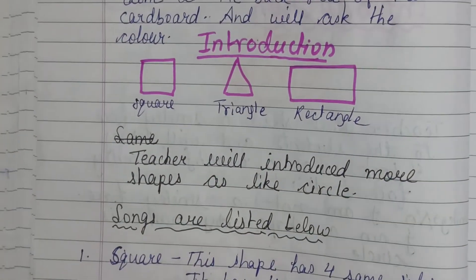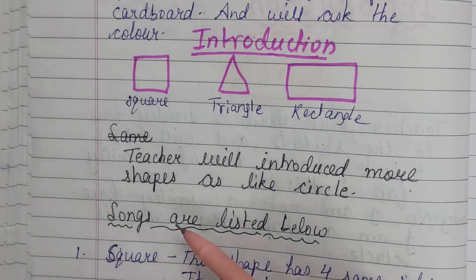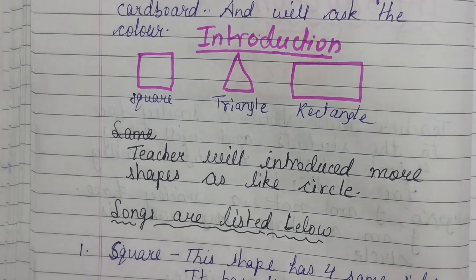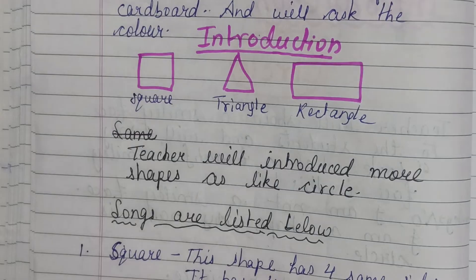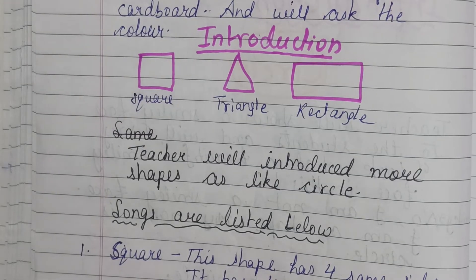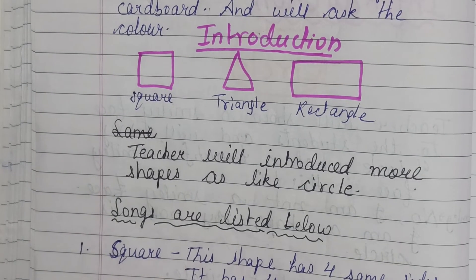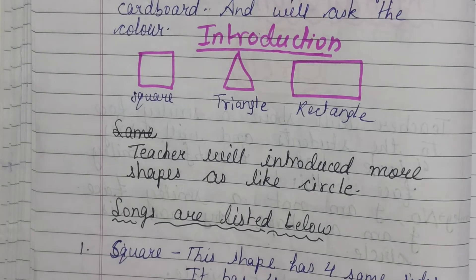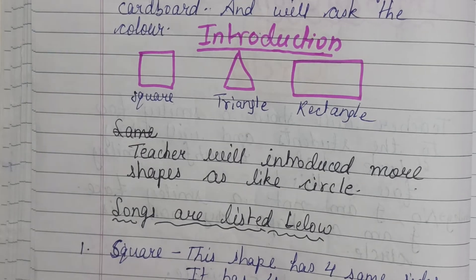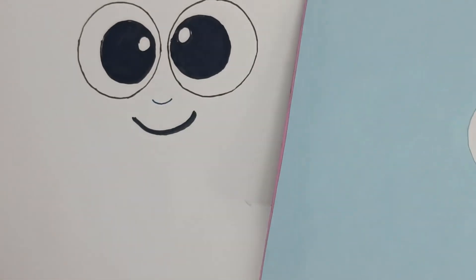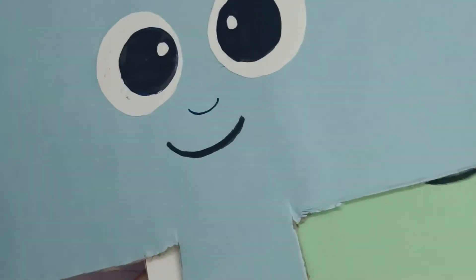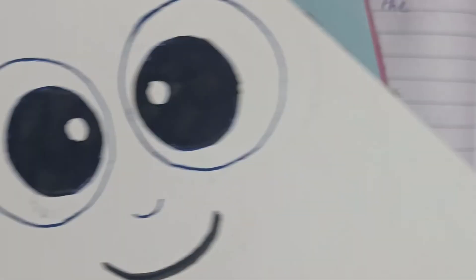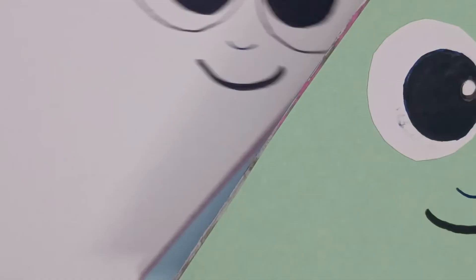You have to use the same procedure for square, triangle, and rectangle. You will show the flashcards and introduce them one by one: square has four same-length sides; rectangle has different-length sides and four corners; triangle has three sides and three corners. You will introduce these with the cardboard shapes — white on the front, then colored on the back with different colors.